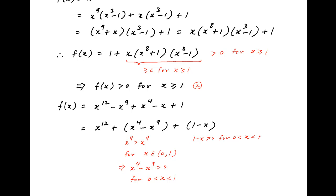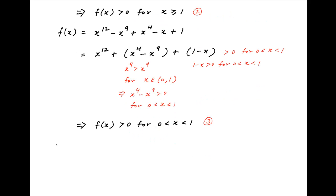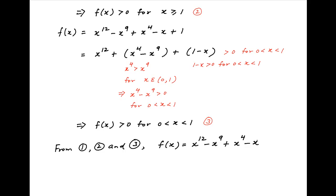Therefore, this whole expression is strictly greater than 0 when x is greater than 0 and less than 1. In other words, f(x) is strictly greater than 0 for 0 less than x less than 1. Let's call this Result 3. From Results 1, 2, and 3 derived above, it follows that f(x), which equals x raised to the power 12 minus x raised to the power 9 plus x raised to the power 4 minus x plus 1, is strictly greater than 0 for all values of x. This is the required answer.